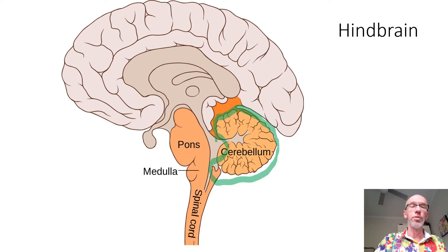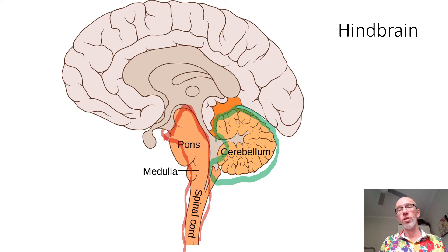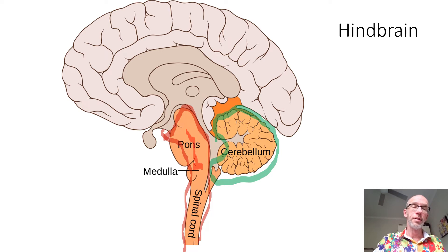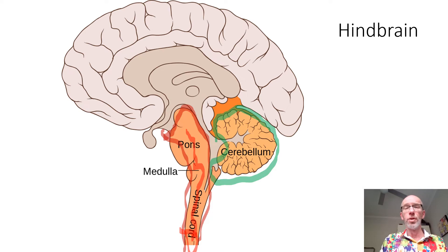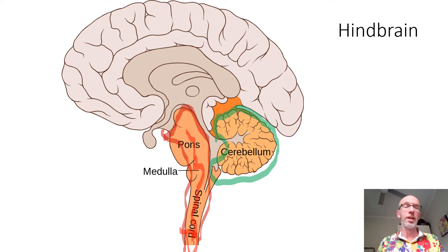Let's move over here to the pons and the medulla. Now these two both play a key role in regulating autonomic functions such as breathing. Have a look at where it is, right on top of the spinal cord. Your pons with your medulla send neural messages down to your intercostal muscles and your diaphragm to regulate respiration. Your medulla also plays a key role in some defensive mechanisms like vomiting, sneezing, blinking, etc., when foreign matter enters the body. And your pons plays a role in alertness.